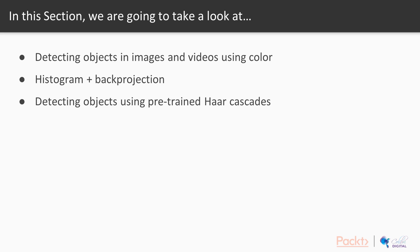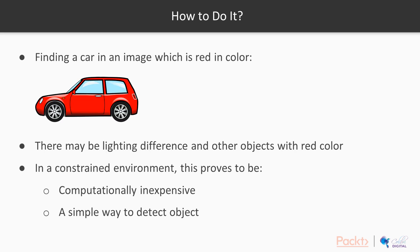The first method will be detecting objects using only their color. For example, finding a car in an image which is red in color. Obviously, this wouldn't be all that accurate. There may be lighting differences and moreover, there may be other objects with that same red color in the image that will be detected as well. But in a constrained and monitored environment, this proves to be a really effective, computationally inexpensive and a very simple way to detect objects.